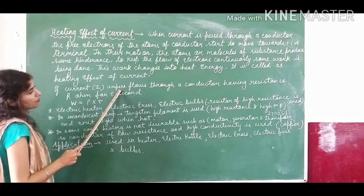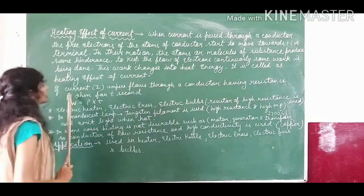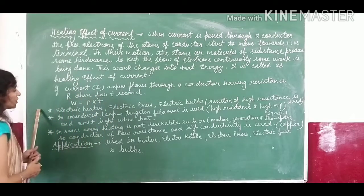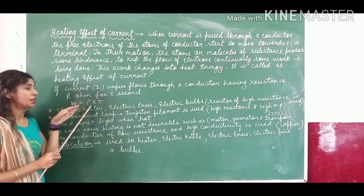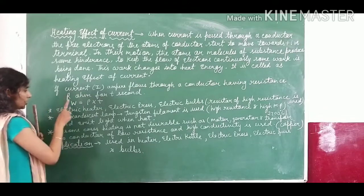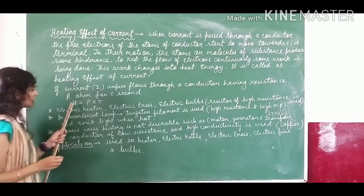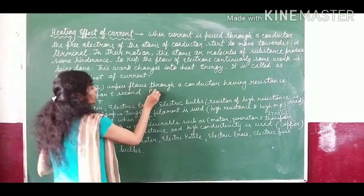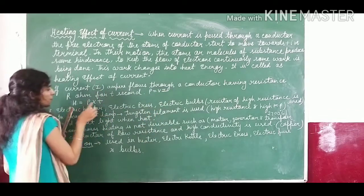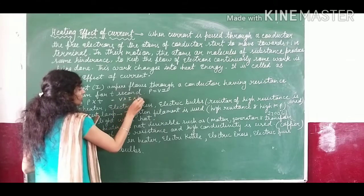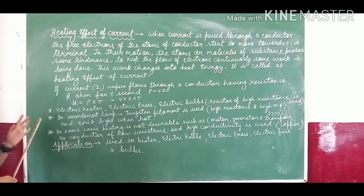Now, if current I flows through a conductor having resistance R for time T seconds, then energy W equals P times T. So heating energy H equals P times T. Since P equals V times I, we can write H equals V times I times T. And since V equals I times R, substituting gives H equals I times R times I times T, which means H equals I squared R T. So we get the formula H = I²RT.